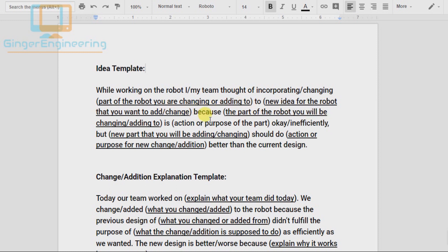So, because the part of the robot that you're changing is doing the action that it's doing, and then explain if it's doing it inefficiently or well, usually it's inefficiently if you're wanting to change it. And then write, but the new idea that you have for the robot can potentially make the action that it's supposed to do more efficient.